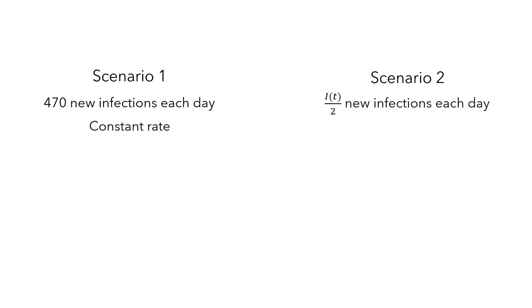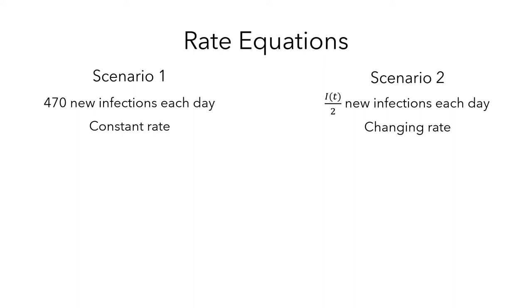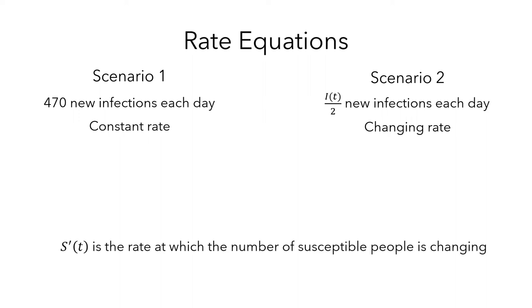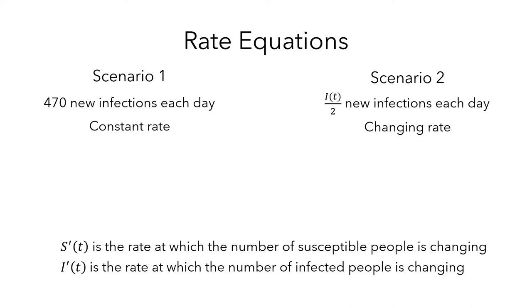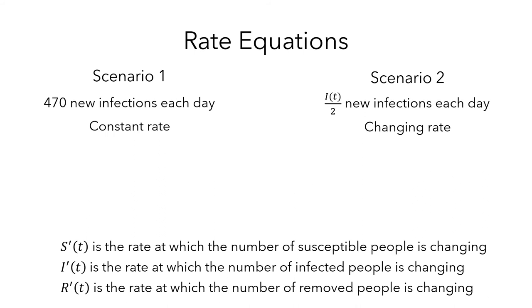Both of the scenarios we looked at involved rates. In the first scenario, there were 470 new infections each day, so the number of infected and susceptible people was changing at a constant rate. In the second scenario, there were i of t divided by 2 new infections each day, because half of the infected people infected a susceptible person, and this rate was changing. Instead of trying to write a formula for the number of susceptible or infected people, we can use a rate equation, also called a differential equation, which is a mathematical formula that describes the rate at which a quantity changes. In general, we can write s prime of t for the rate at which the number of susceptible people is changing, and i prime of t is the rate at which the number of infected people is changing. Each of these rates is measured with units of people per day.